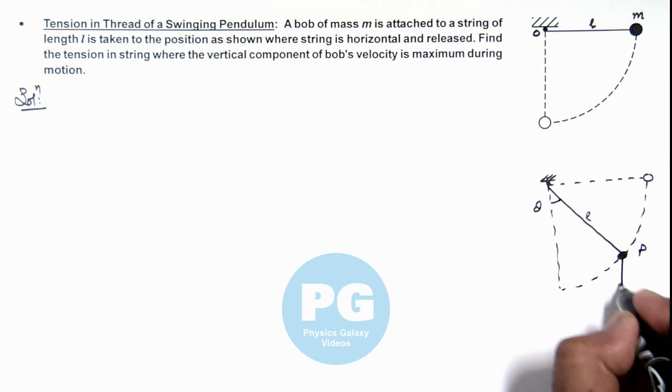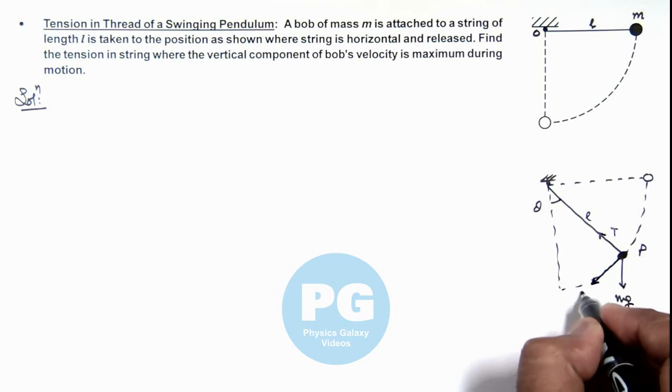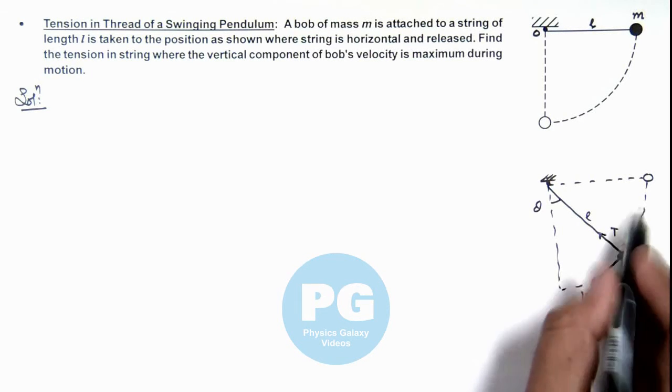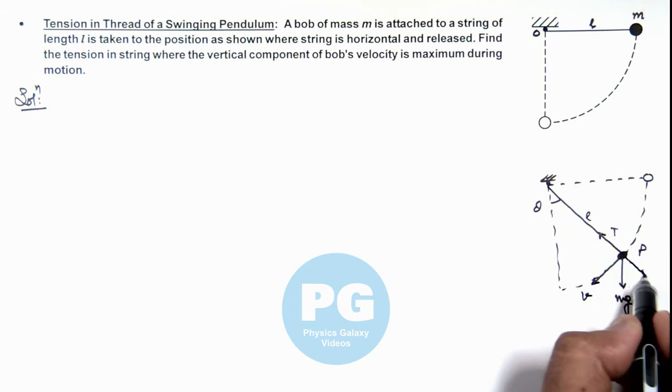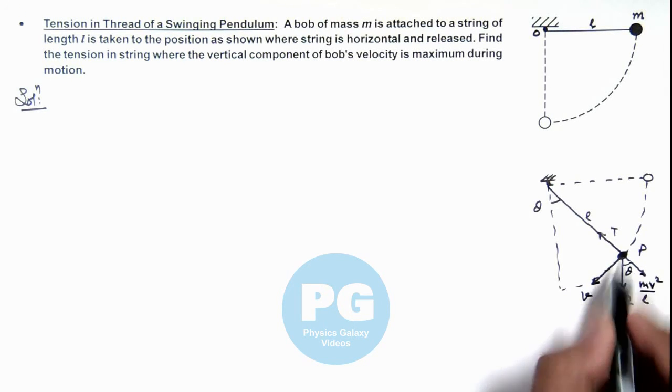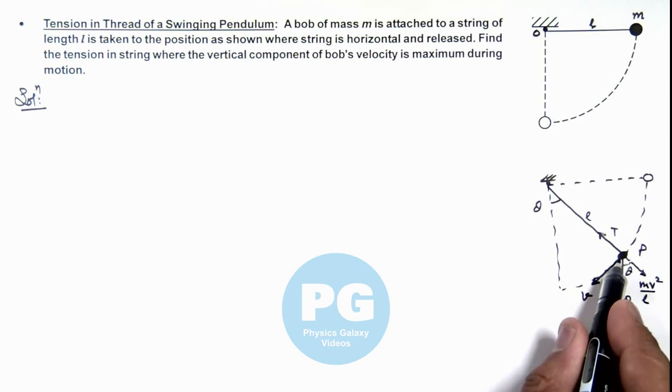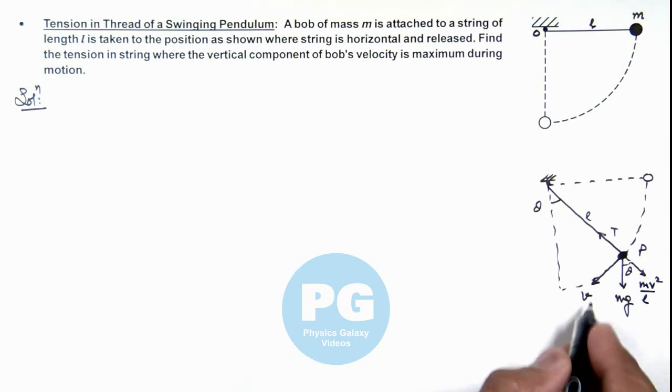At this point it is experiencing mg in the downward direction and tension upward, and it is having a tangential velocity v. Due to which in the rotating frame of reference, outward centrifugal force will be mv²/l at an angle theta with vertical. At this point we can first calculate the velocity.